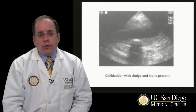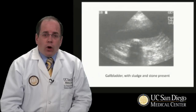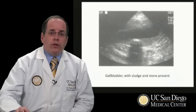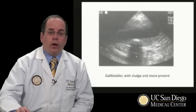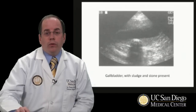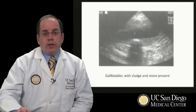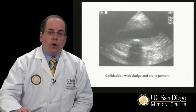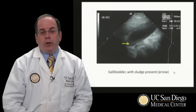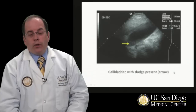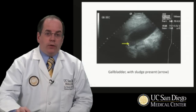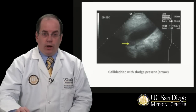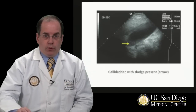Here's a patient who has both a stone and gallbladder sludge. The stone reflects sound quite brightly here with a lot of shadowing behind the actual stone. In addition, we can see dark bile here with some sludging dependent within the gallbladder. Here's another picture of a gallbladder with sludge present, and you can see the layering of sludge in the gallbladder. No stone is visible in this picture though.